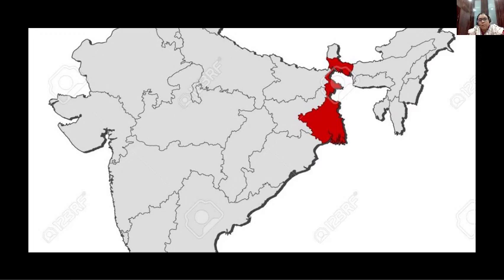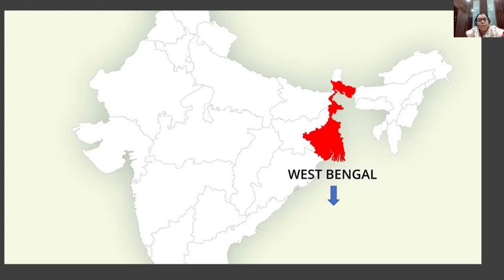Now children, can you recognize the map? This is the political map of India, showing different states and union territories. Can you identify the part that is colored in red? Can you identify the name of the state? The name of the state is West Bengal. This is West Bengal.